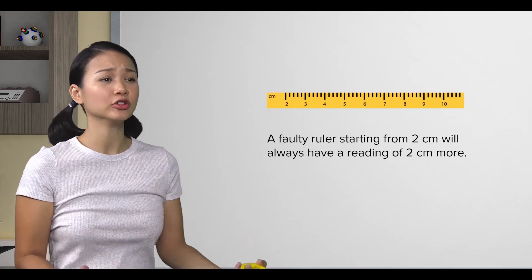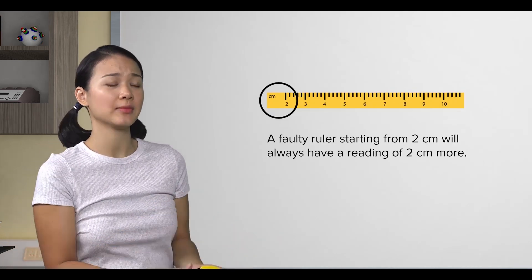Okay, so if I have a faulty ruler that starts from 2 cm, then my readings are always 2 cm more, right? That's right.